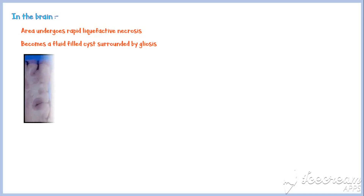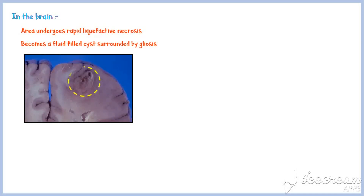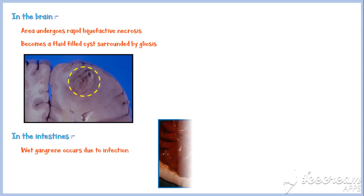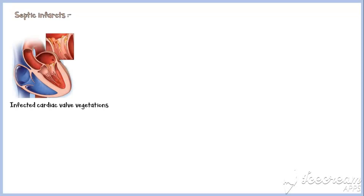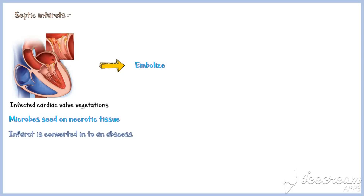In this picture, the yellow circle indicates a brain infarction. In the intestines, wet gangrene develops in the infarct as a result of secondary infection by intestinal flora. Septic infarcts occur when infected cardiac valve vegetations embolize, or when microbes seed on necrotic tissue. In these instances, the infarct is converted into an abscess, which ultimately becomes fibrosed as a result of the healing process.